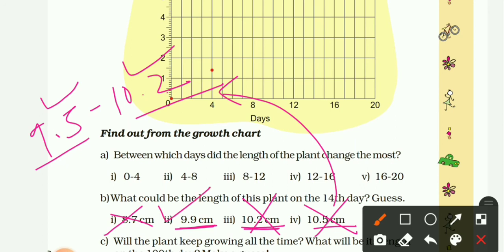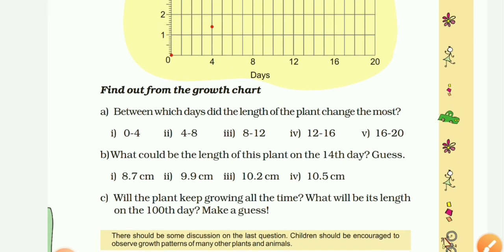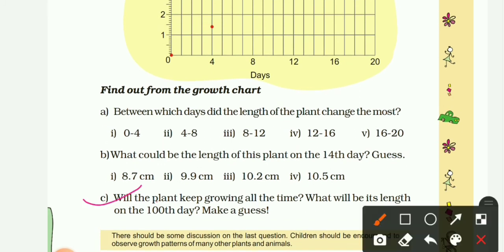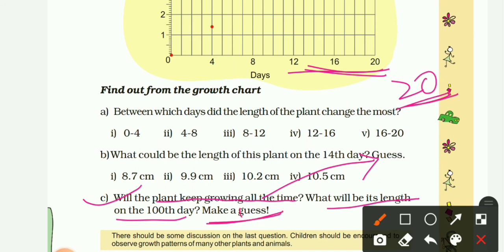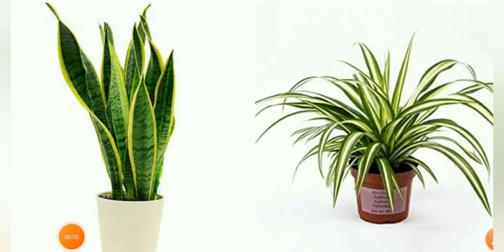Now last question: will the plant keep growing all the time? No, definitely not, because after a time the growth of everyone - plants, animals, and human beings - the growth is stopped after a time. What will be its length on 100th day? It's just a moong dal plant, so its height should be less than 20 centimeter. Now make a guess. This guess may be different from your friends.